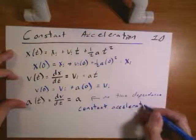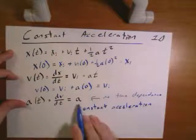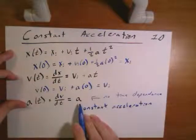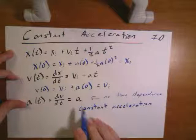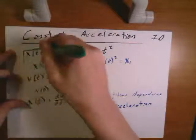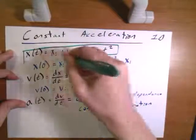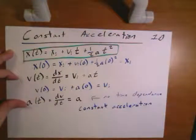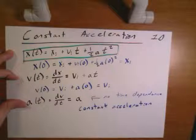No matter what value for time I've got, I've always got the same value for acceleration. So this is how we can prove that this equation that we've assumed really does work for a situation where we've got constant acceleration.